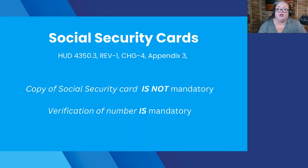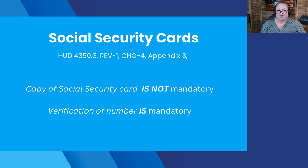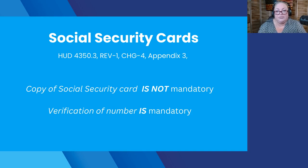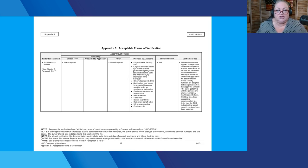One reminder: when verifying social security numbers, a common misconception is that you have to get a copy of the social security card. You do not. HUD actually specifically says it's not mandatory that the card itself be copied — what you need is something that verifies the number. There are a few different ways to do that. If you look at Appendix 3 in the 4350.3, that will give you a number of different ways that you can verify.